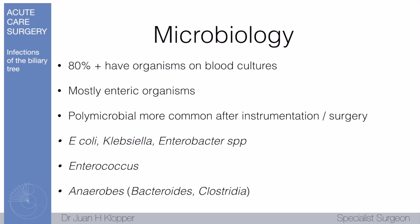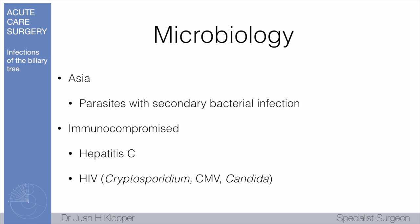Importantly, the anaerobes. Specifically we're talking about E. coli, Klebsiella, Enterobacter species, and Enterococci. Patients with instrumentation need anaerobic cover — Bacteroides and Clostridia. In Asia we really have to think about parasites and secondary bacterial infection. In immunocompromised patients, specifically in Africa and South America, we see hepatitis C and HIV with Cryptosporidium, cytomegalovirus, or even Candida infections. So a wide variety of organisms to consider when deciding on antimicrobial therapy.